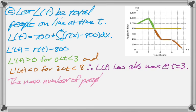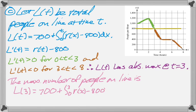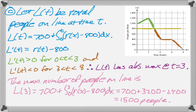And then we need to calculate the number of people. So that's just going to be L of 3, which we know is 700 plus the integral from 0 to 3 of R of X minus 800 dX. And so 700, and then plus 3,200. We actually calculated the integral of R of T from 0 to 3 in part A, so that's where I got 3,200. And then integrating 800 from 0 to 3 is just 3 times 800, so minus 2,400. So at T equals 3, there's 1,500 people in line.